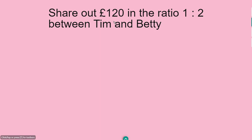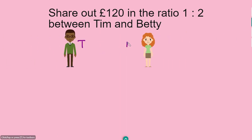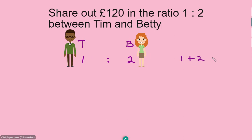Now for the next question: share 120 pounds in the ratio 1 to 2 between Team and Betty. The first thing we do is write out the names — Team and Betty — and record the ratio 1 to 2 next to each name.